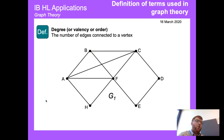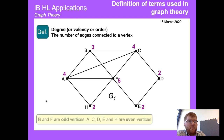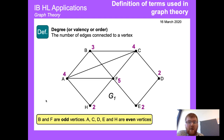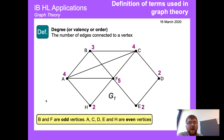The degree, valency, or order of a vertex is the number of edges connected to it. For vertex A we have four edges, so its degree is 4. For vertex D there are only one or two edges. Vertices B and F with degrees 3 and 5 are odd vertices, whereas A, H, C, D, and E are even vertices because they have even degree.